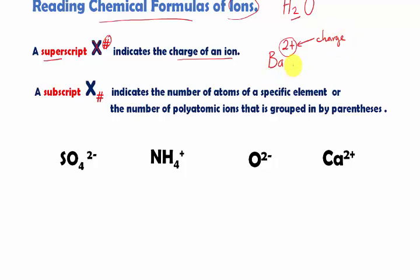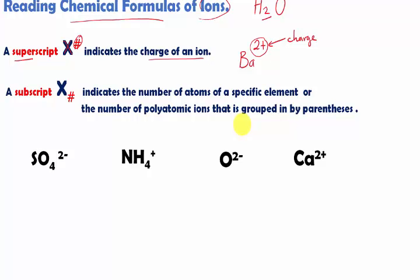Or we can say the other way around, where oxygen has gained two electrons to be stable, and oxygen is going to have two minus. Notice how the two is not written right here, but it's written on top or above the chemical symbols. That's why we call it a superscript.